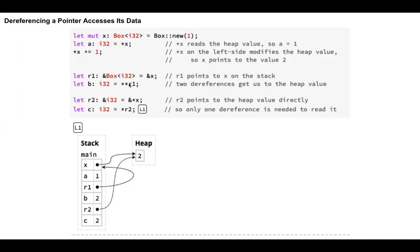Now see double dereferencing. Two dereferences get us back to the heap value. See, R1 was initially a reference to x. So if you have to dereference x, you do double asterisks. Now after the statement, B will have the value two. See, it's not a pointer. You're directly accessing the value. So double asterisk. Now this will work only if R1 itself is a pointer, itself is a reference.